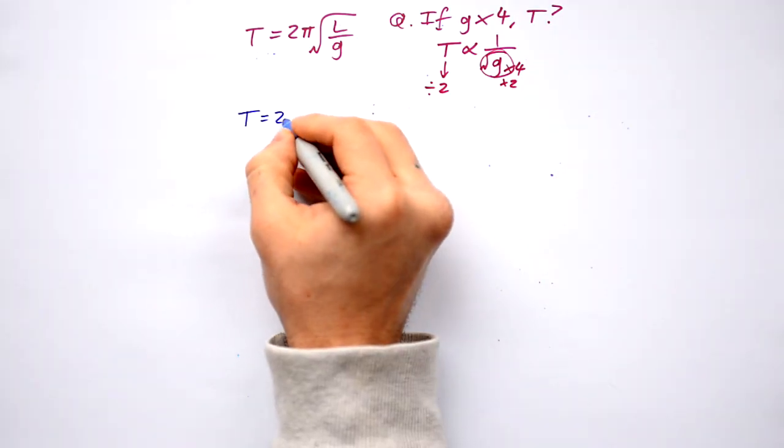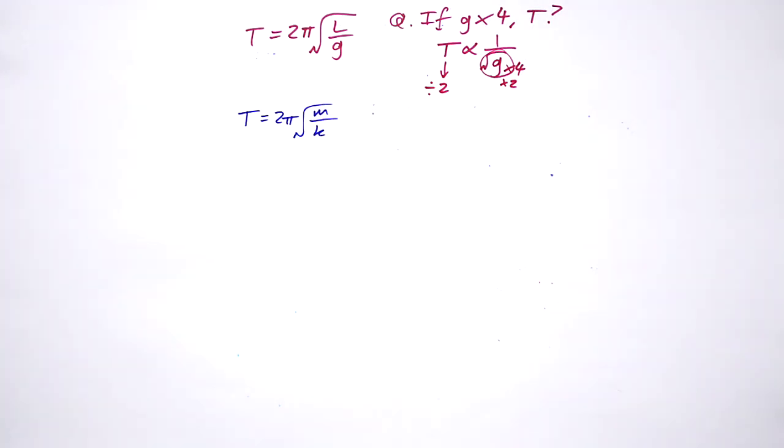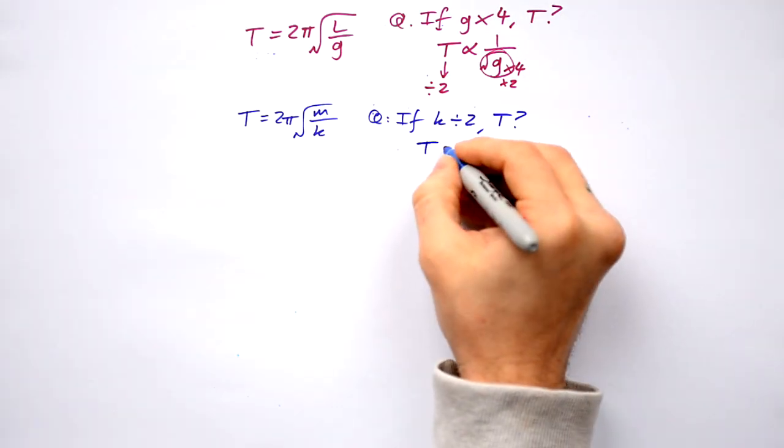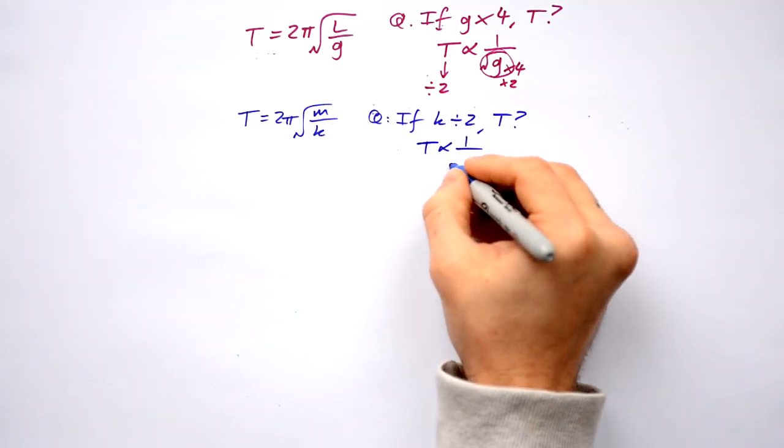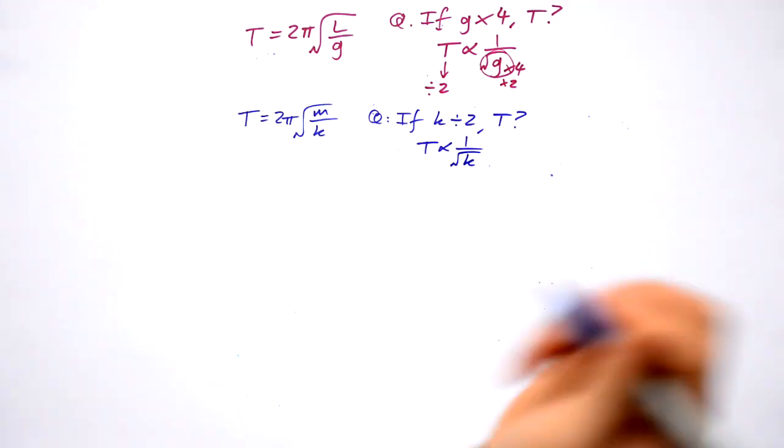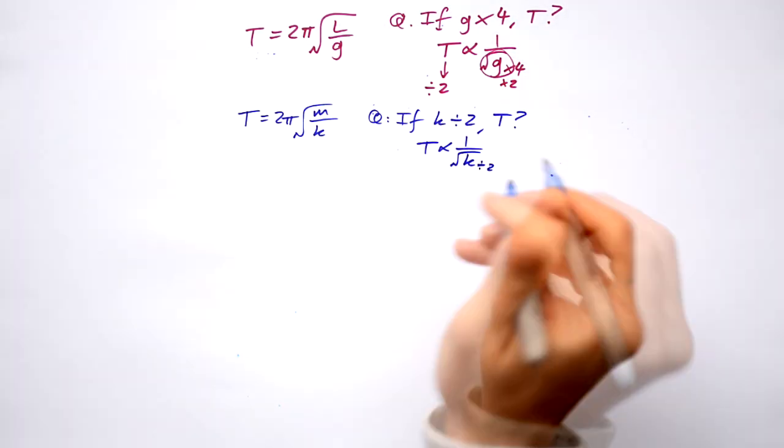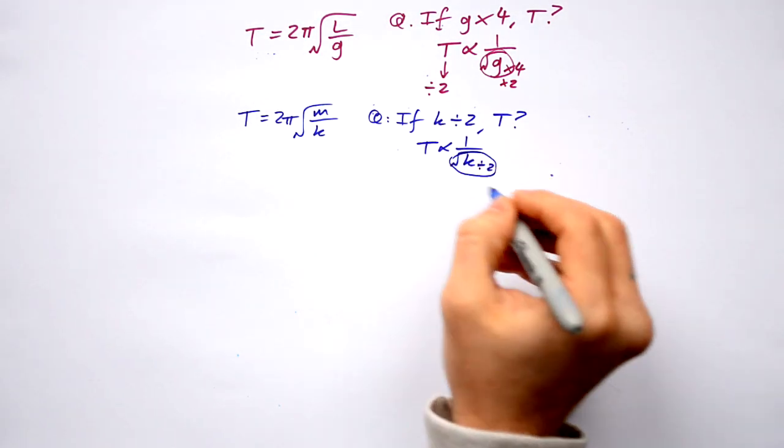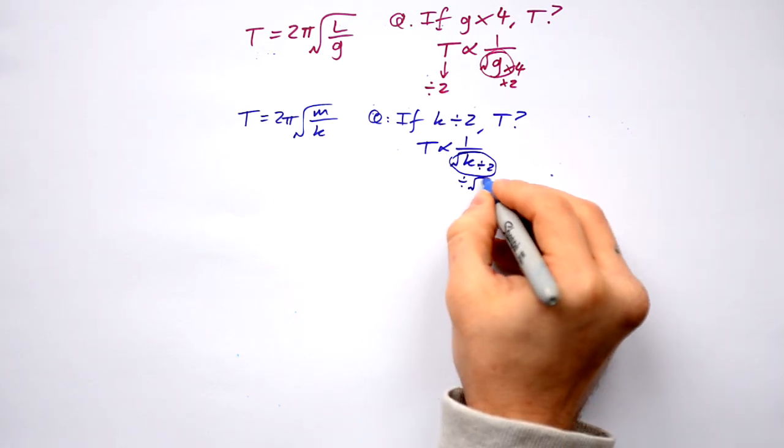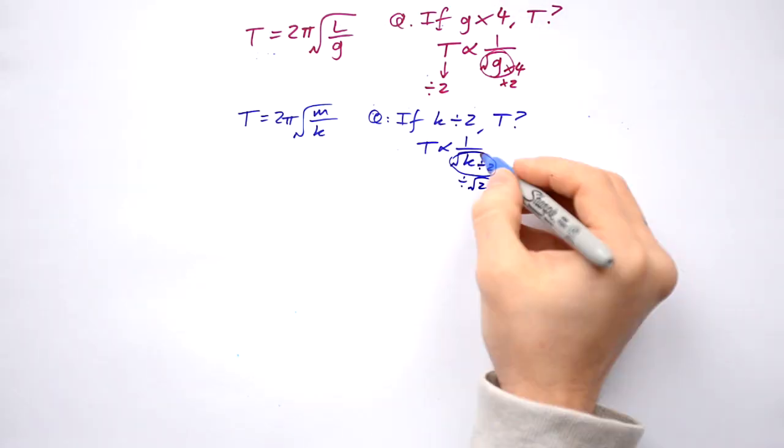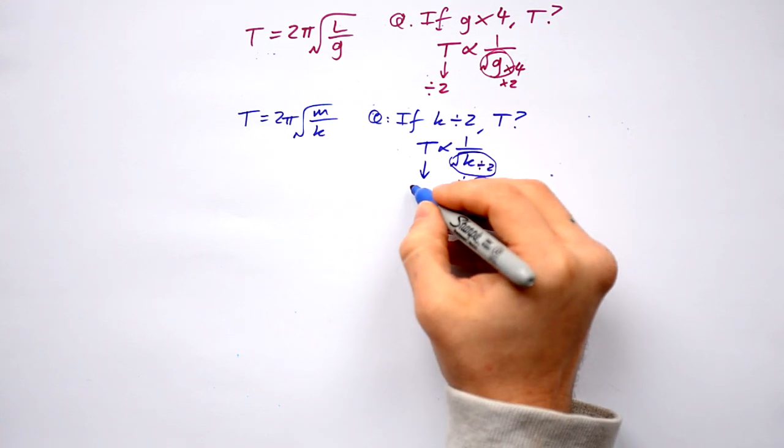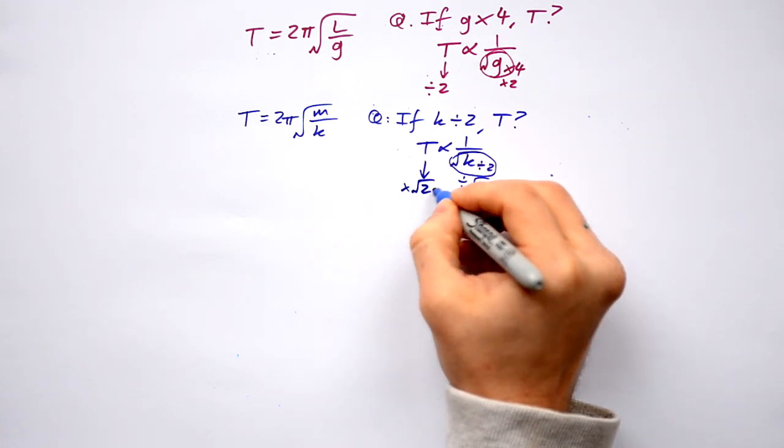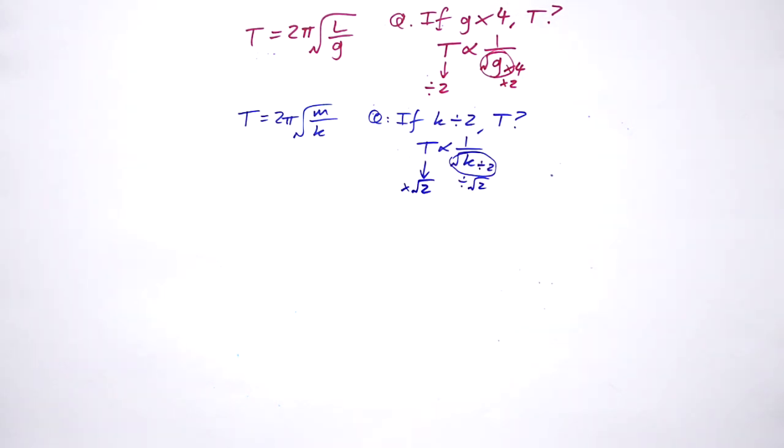Let's look at our other one as well for a spring. M being the mass, k being the spring constant. If the spring constant halves what happens to the time period? Again time period is proportional to one over square root of k. This is going down by a factor of two. So that must mean that the whole thing is going down by a factor of root two. It's on the bottom so therefore time period goes up by a factor of root two.